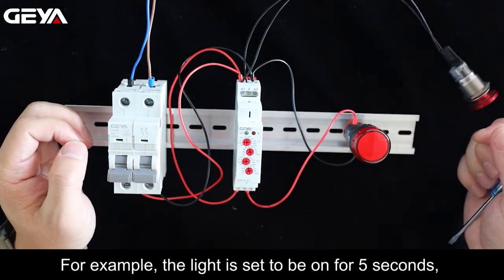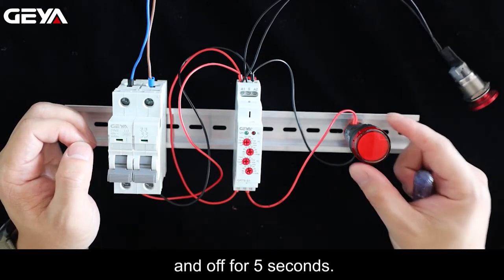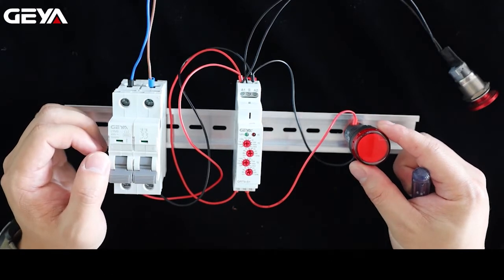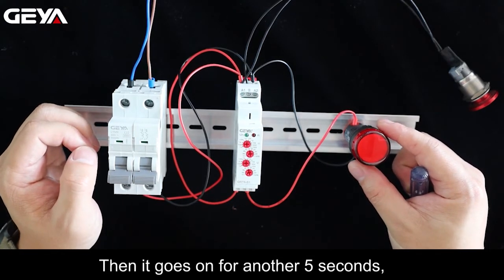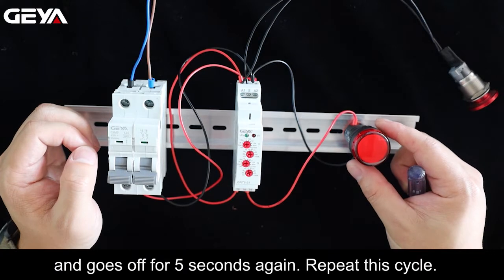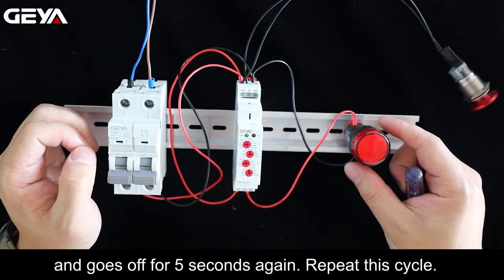For example, the light is set to be on for 5 seconds and off for 5 seconds. Then it goes on for another 5 seconds and goes off for 5 seconds again. Repeat this cycle.